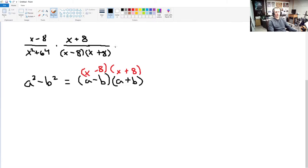And so, now when we treat this like a multiplication problem, we multiply across the top, so that gives us x minus 8 times x plus 8 in the numerator. We multiply across the bottom. We couldn't factor this x squared plus 64, so it remains a factor on its own times the other denominator.